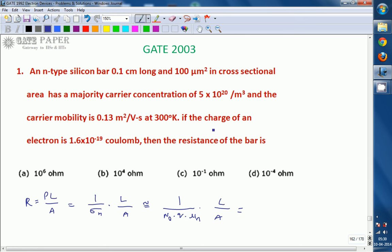The Nₐ value is 5×10²⁰, this is the q value, and this is the μₙ value, the electron mobility.